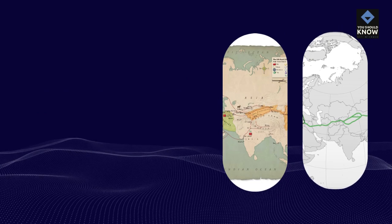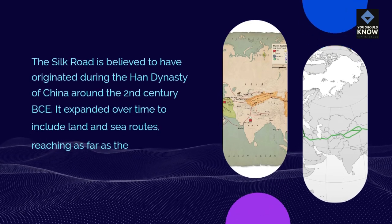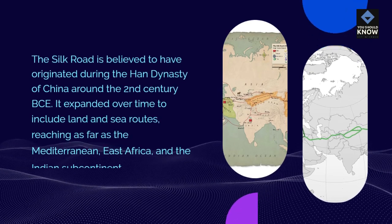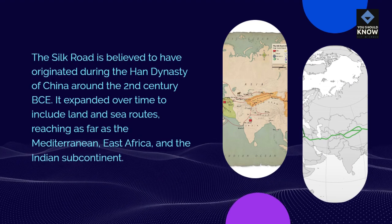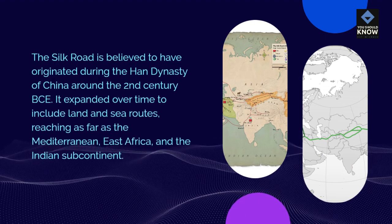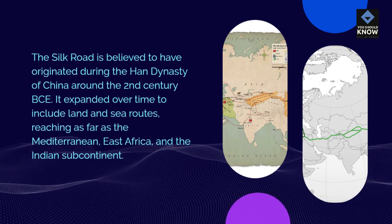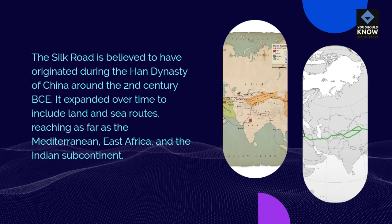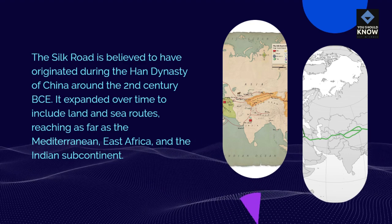Origin and Expansion: The Silk Road is believed to have originated during the Han Dynasty of China around the 2nd century BCE. It expanded over time to include land and sea routes, reaching as far as the Mediterranean, East Africa, and the Indian subcontinent.